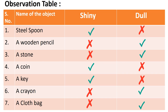Here in this table, I have listed the common items I collected: steel spoon, wooden pencil, stone, coin, key, crayon, cloth bag, etc. I then observed their surfaces and marked down whether they appeared shiny or dull. Students, you are free to list down as many items as possible, and it is not mandatory to note only the items I have listed.